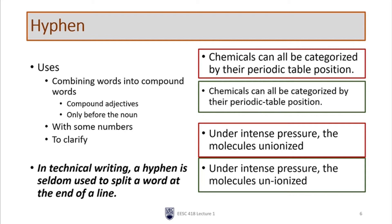'Chemicals can all be categorized by their periodic table position.' If you've taken chemistry, you know periodic table is a single item. However, if you've never heard of the periodic table and those two words had no particular meaning to you, you might read 'periodic' as modifying 'position.' Without a hyphen, you don't know for sure what is being modified. 'Periodic-table position' clarifies that periodic table is a single concept modifying the position.